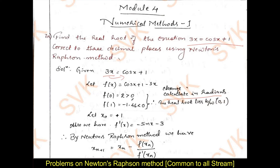Out of these two values, which can be considered as x naught? The value you choose should approach 0 very fast. When I consider 2 and minus 1.46, minus 1.46 approaches nearer to 0 more than 2. Therefore, I will consider x naught as 1. Let x naught equal to 1.